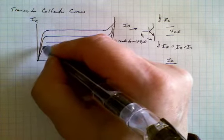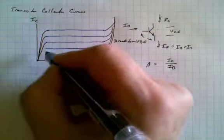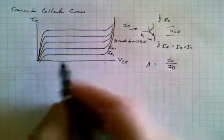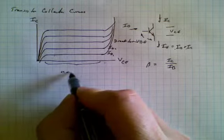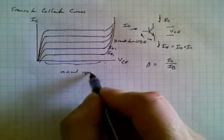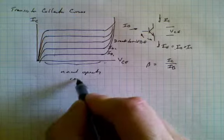So this equation is true, but it's only true during certain regions. It's only true during this region over here. And this is the normal operating region of the transistor.